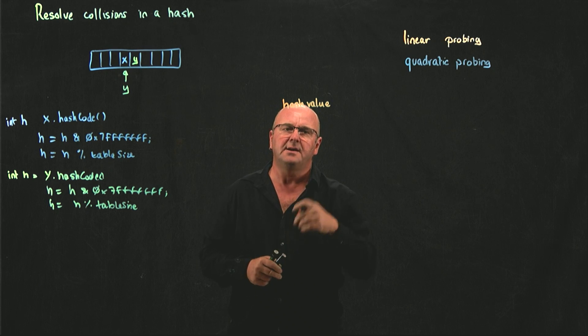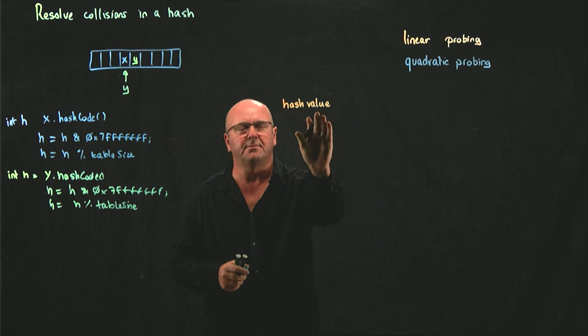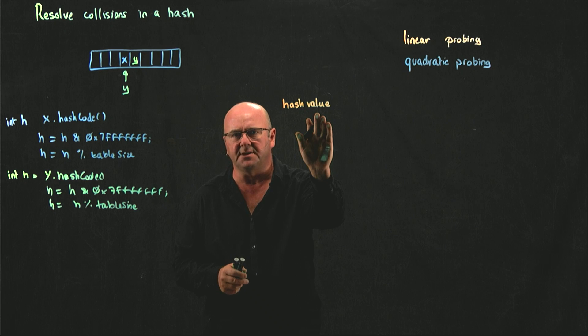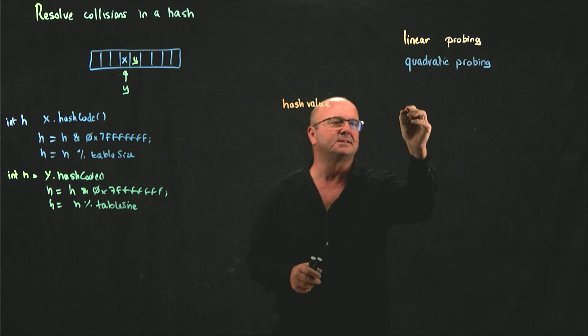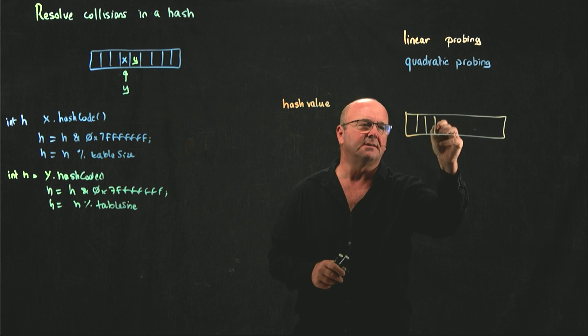and then if you come back with the hash value for another element, and the space in the array is filled, so here's our array,